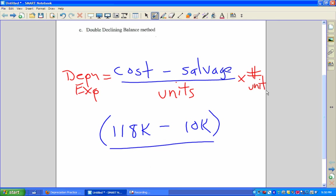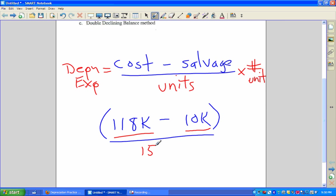So what we're going to do is the top of that fraction is still the same. The cost was still $118,000 minus $10,000. Salvage value didn't change. What's different here is the units. The units for this one where we said 150,000 miles, so we just divide by 150, and I'll use thousands again.